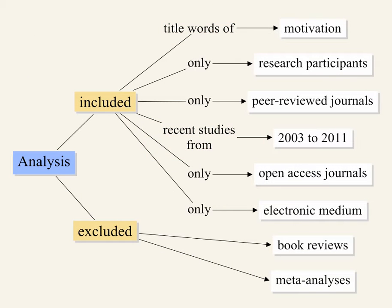The 10 sources that form the basis of this analysis were selected from 10 peer-reviewed educational technology journals. Because all sources were selected from educational technology journals and books, all included an electronic medium. The primary inclusion criteria was that only sources with the word motivation as part of the title would be included. To figure as part of the analysis, the journal sources had to include research participants. This means that meta-analysis or book reviews were excluded.